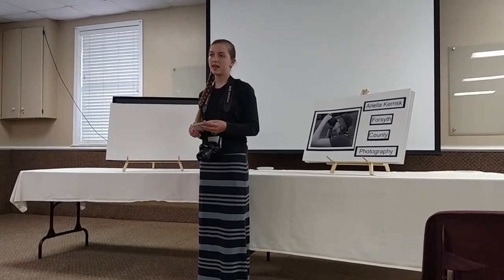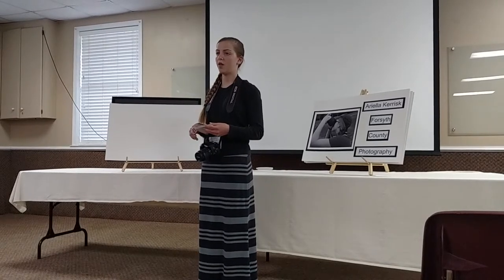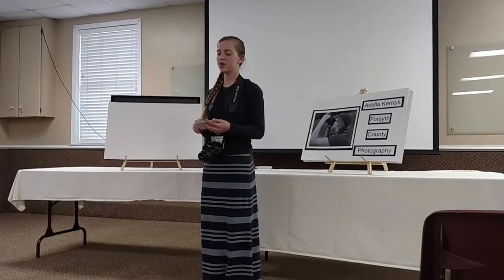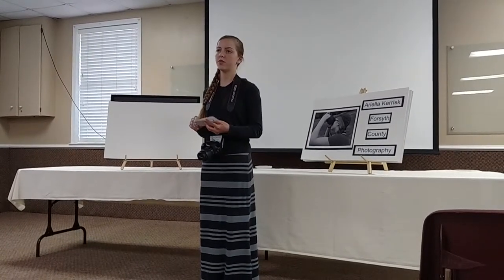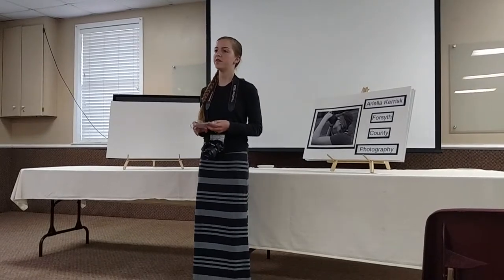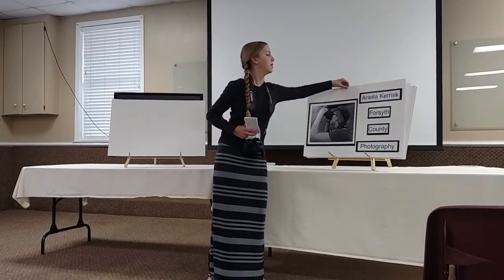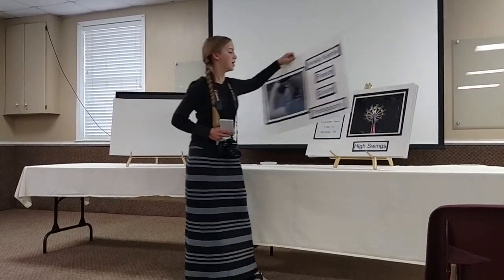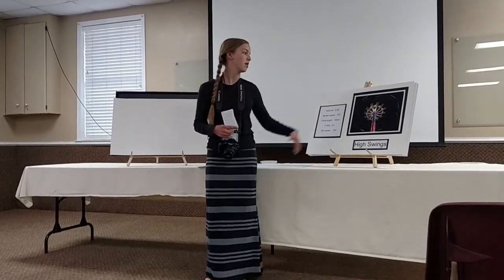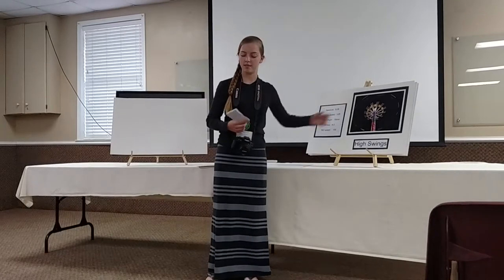The next setting is shutter speed. Shutter speed is how long the shutter stays open. If you set your shutter speed for super slow, such as 1/25th of a second, you can capture a moment like this. Prolonged shutter speeds will blur any motion in the picture, such as these lights.